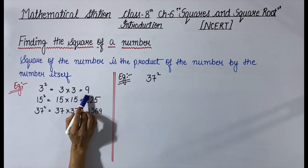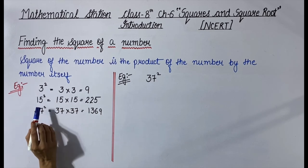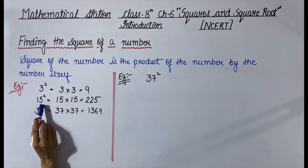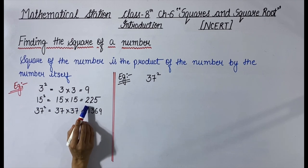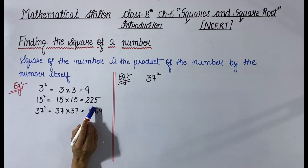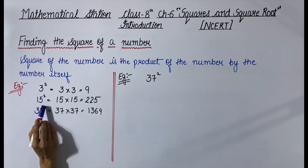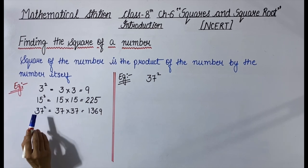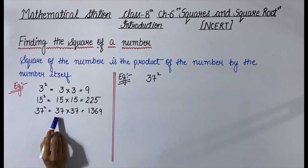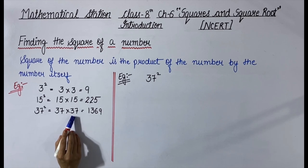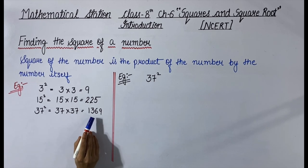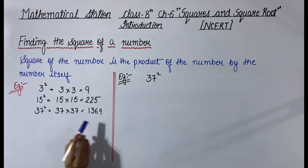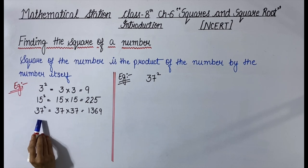That means 9 is the square of 3. Similarly, 15 squared is equal to 15 multiplied by 15, which is equal to 225. So 225 is the square of 15. And 37 squared is equal to 37 multiplied by 37, which is equal to 1369. So 1369 is the square of 37.